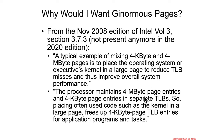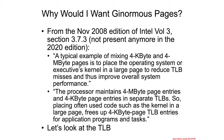The processor maintains 4 megabyte page entries and 4 kilobyte page entries in separate TLBs. Placing frequently used code, such as the kernel, in a larger page frees up 4 kilobyte TLB entries for application programs. Using larger pages improves performance, especially for a big blob of memory like the kernel that's always the same and not self-modifying, so the virtual-to-physical translation is easily cached.